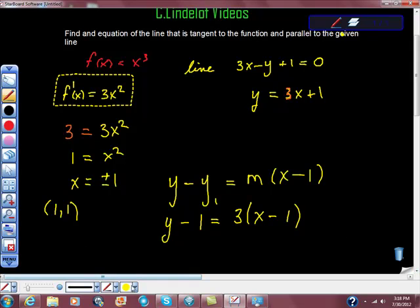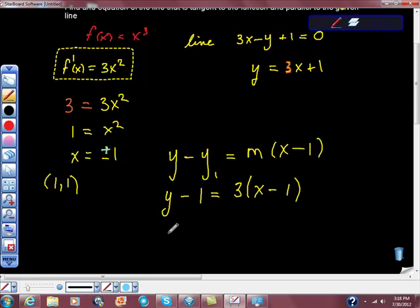But so far we only worked out when x is positive 1. But in this case, we have two parallel lines. Now we have to do the negative 1. So y minus minus 1 is equal to 3 times x minus minus 1 because when x is negative 1,